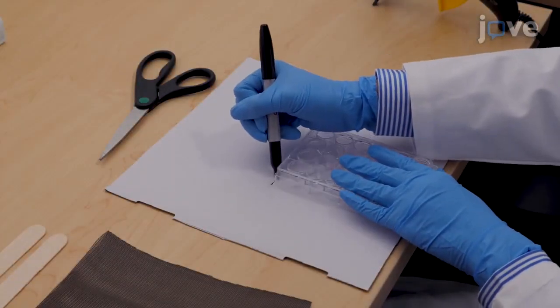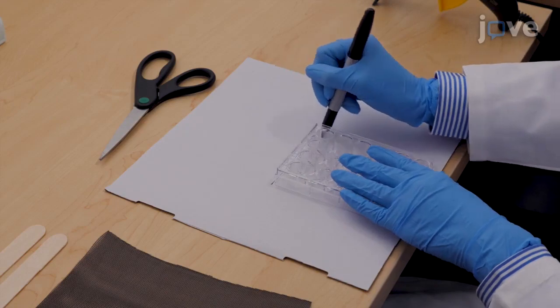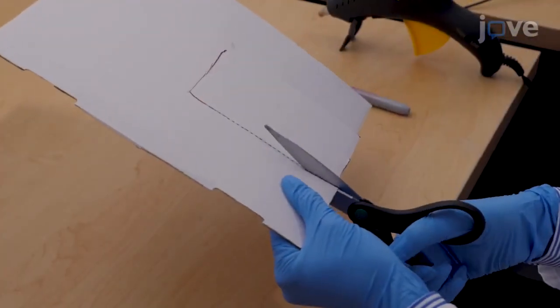Begin by creating a cardboard template of a 24-well cell culture plate. Trace around the plate and cut out the designated area.